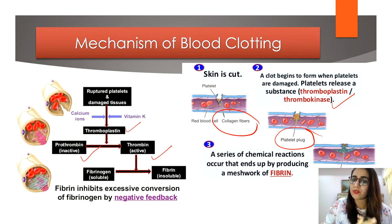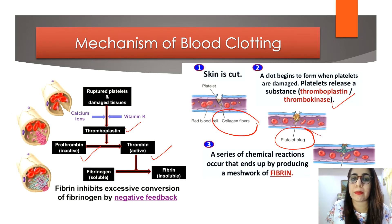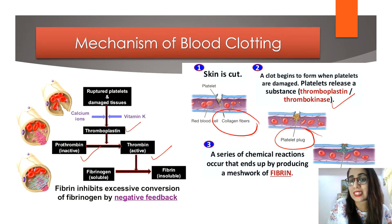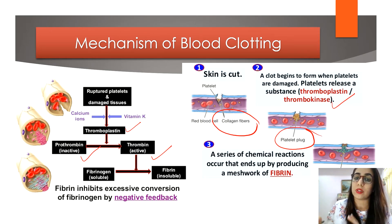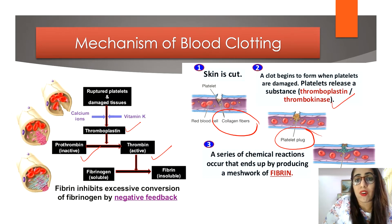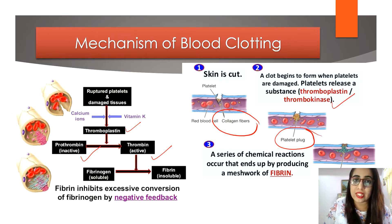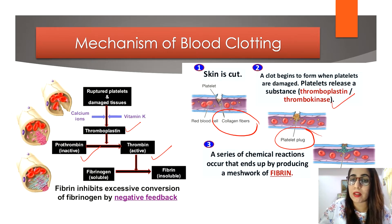Thrombin catalyzes the conversion of fibrinogen — a soluble protein flowing in the plasma — into fibrin. Fibrin is insoluble, allowing it to form a network of protein fibers on the wound surface to trap blood cells and form a blood clot.